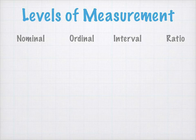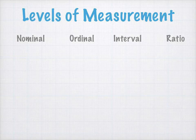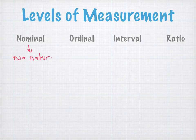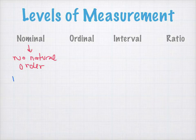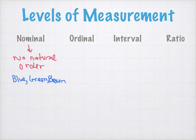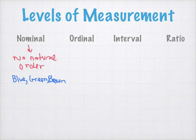The last topic is levels of measurement — how are we able to measure these various types of data? When we talk about nominal data, this is associated with a categorical type of data that can't be ordered; there's no natural order. For example, eye color — blue, green, or brown. We sample 100 people and get results. This is nominal because we can't put blue, green, or brown in a natural order. It's just blue, green, or brown; it doesn't matter what order they're listed.